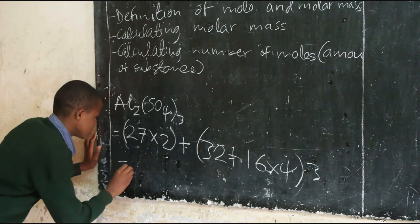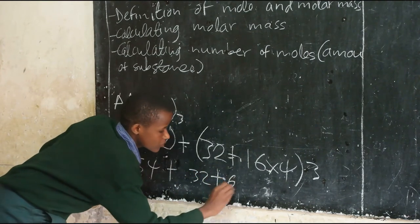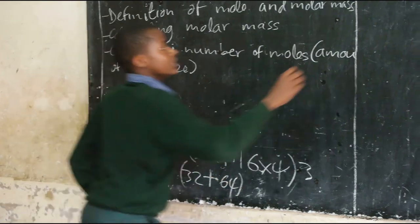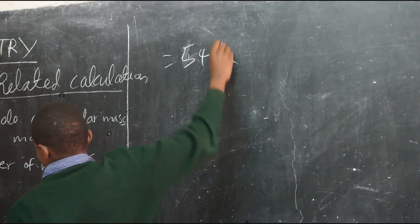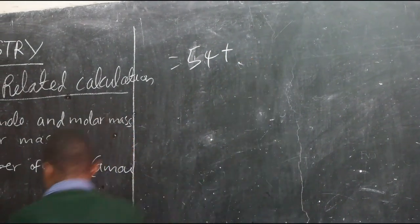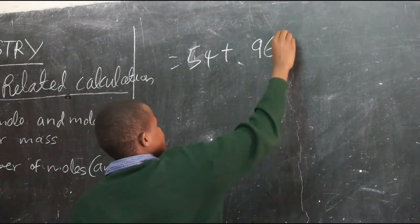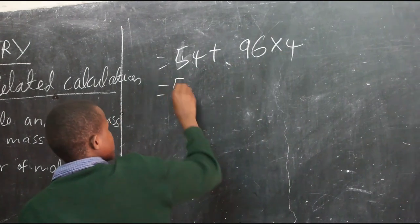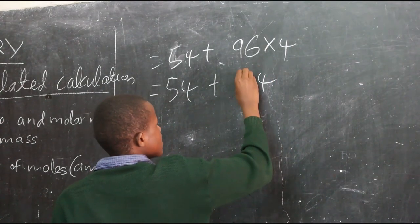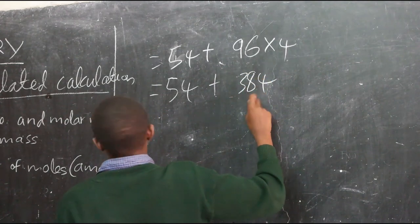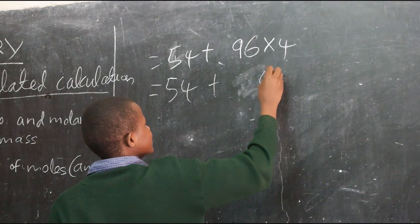So here it will be 54 plus 32 plus 64. Then 54 plus 60... Thank you.